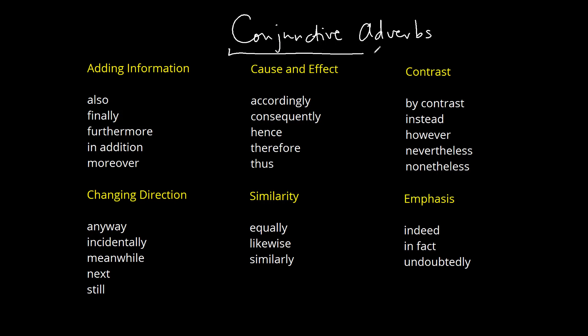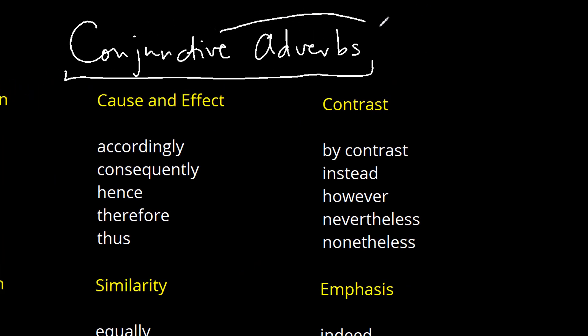Conjunctive adverbs are this odd kind of hybrid creature between a conjunction and an adverb. They're not a separate part of speech — we have eight parts of speech, and conjunctive adverbs are typically not seen as one of those eight. But they are kind of unique, so we do want to single them out for attention. They are similar to a conjunction in that they tie together clauses, especially independent clauses, and often those independent clauses are separate sentences. We tend to use conjunctive adverbs close to the beginning of a major clause, which is often connected to a separate sentence that came before.